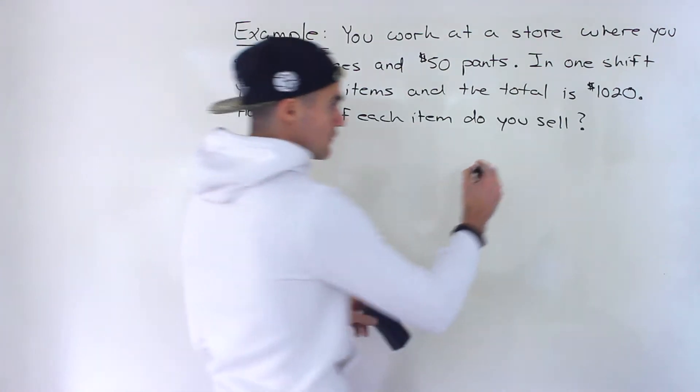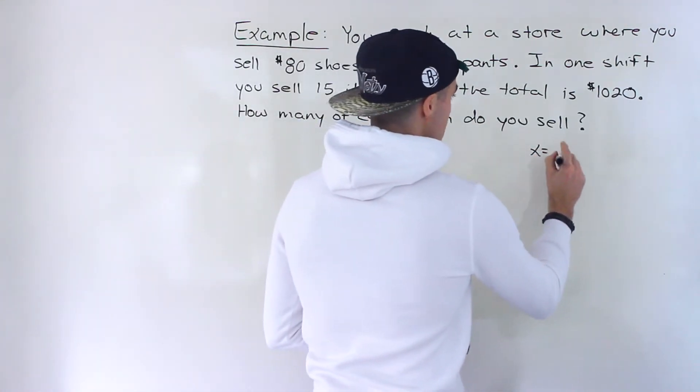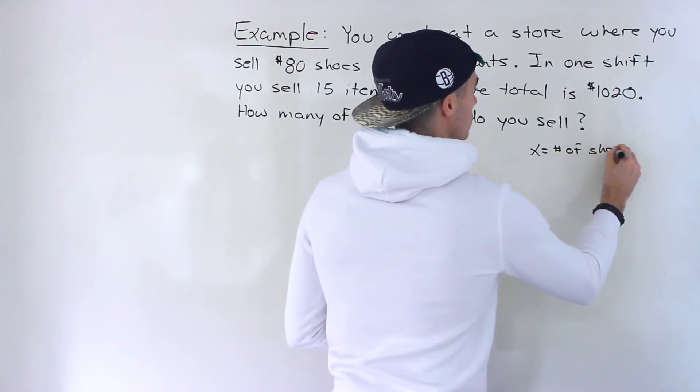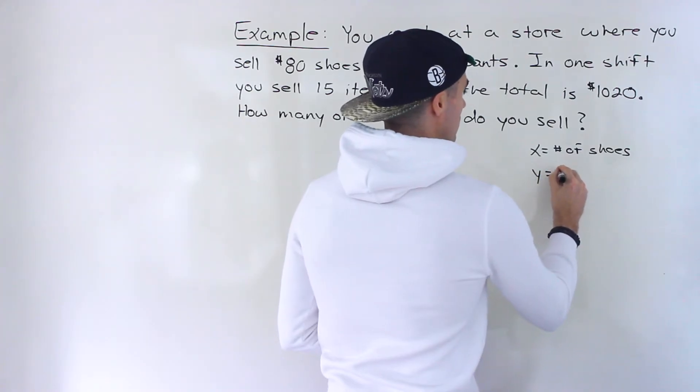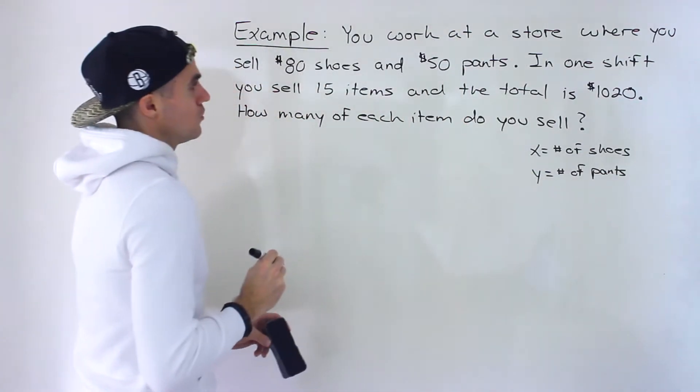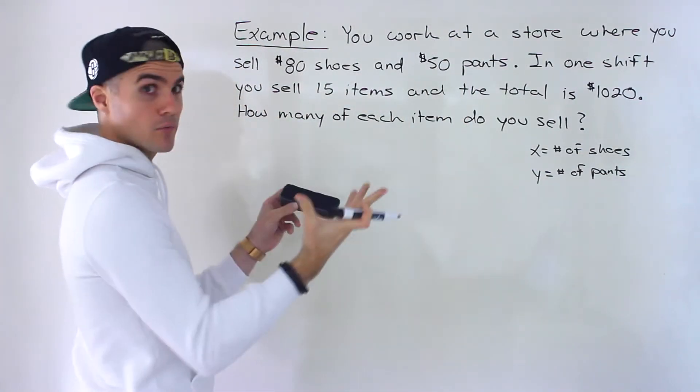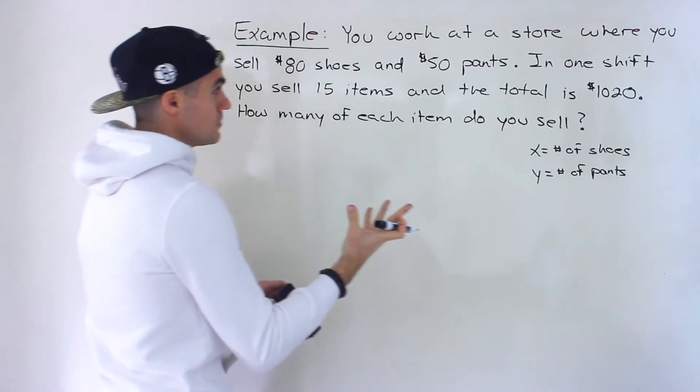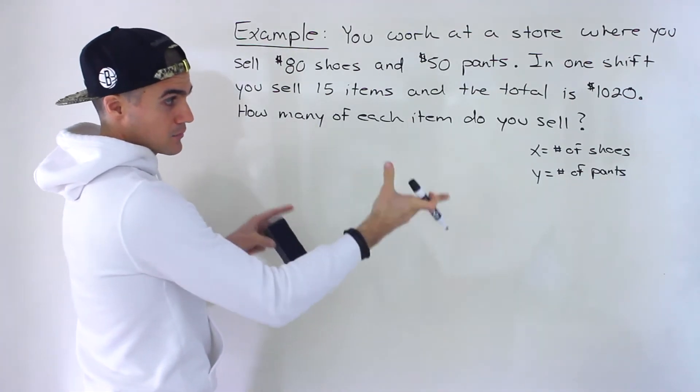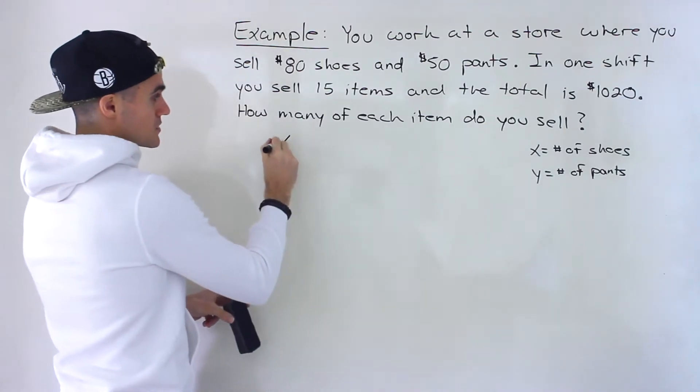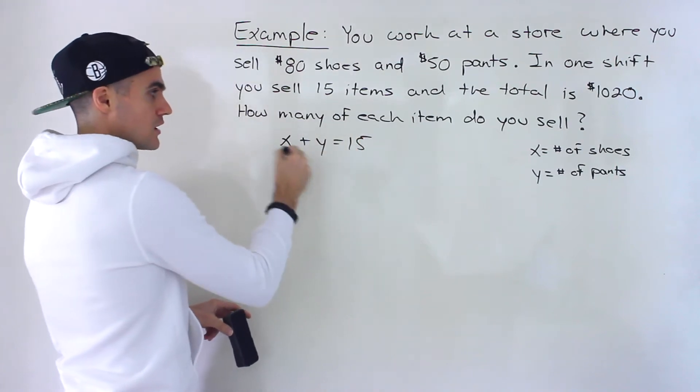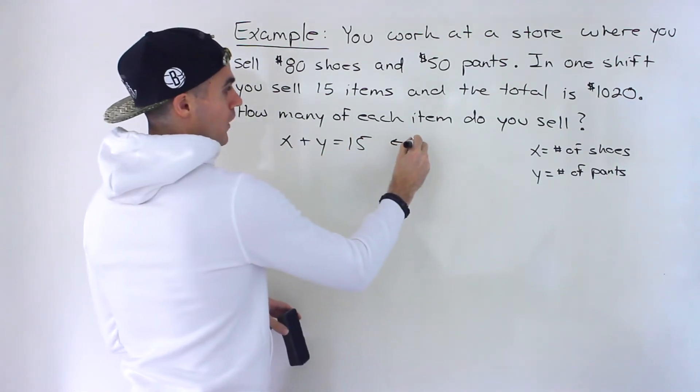So what I'm going to do is introduce two variables. I'm going to let x equal the number of shoes that you sold in your shift and then y equaling the number of pants that you sell. So notice that we're told that the total number of items is going to be 15. So if x is the number of shoes, y is the number of pants, then that means that x plus y is going to be 15. So notice that this equation here deals with the quantity.